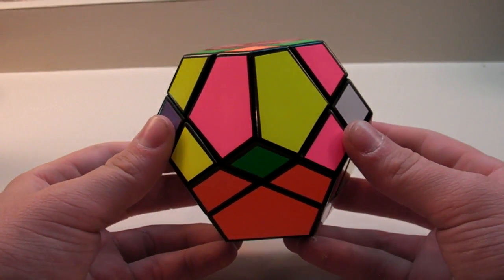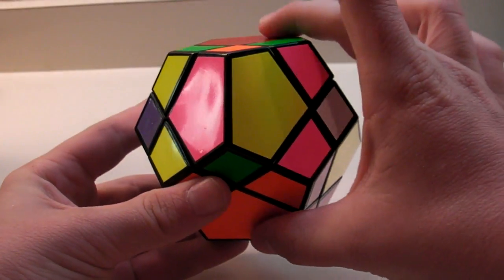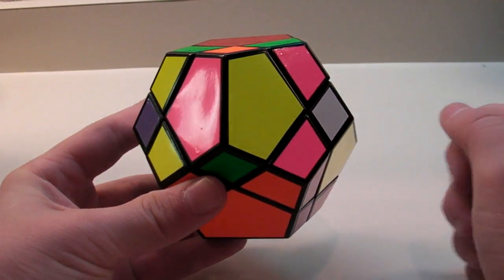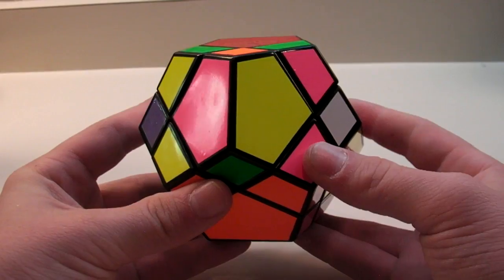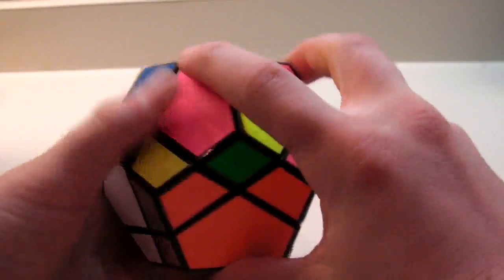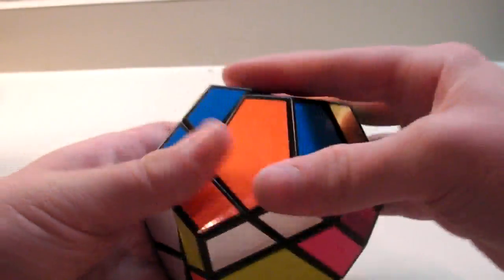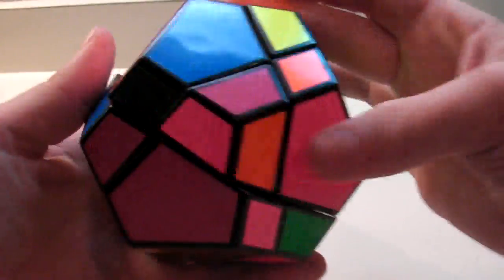Now I would like to show you the case where the two opposite ones are flipped and all the other ones are correct. But this one is very simple to do. So I will get to this case. Two, three, four, five, six.